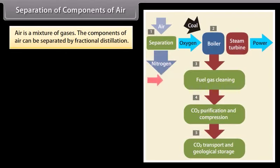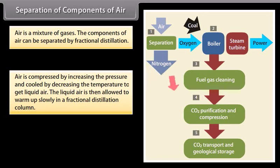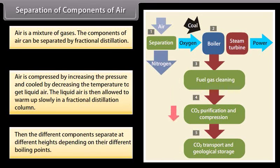Separation of components of air. Air is a mixture of gases. The components of air can be separated by fractional distillation. Air is compressed by increasing the pressure and cooled by decreasing the temperature to get liquid air. The liquid air is then allowed to warm up slowly in a fractional distillation column. Then, the different components separate at different heights, depending on their different boiling points.